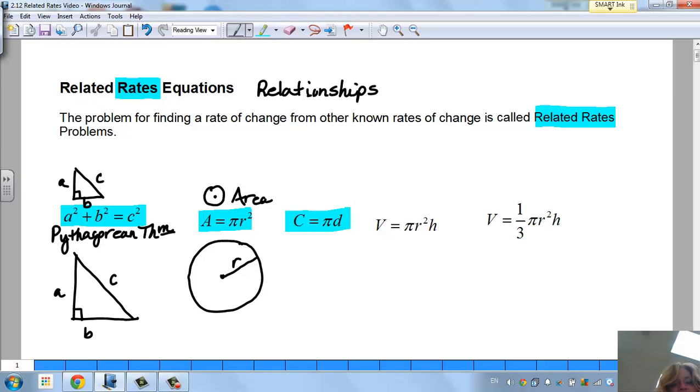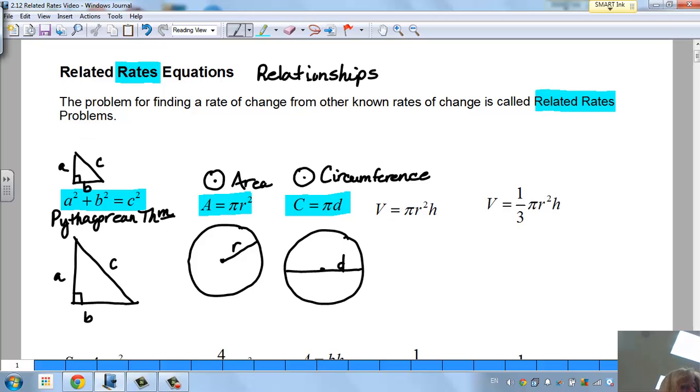The next one is C equals pi d, which is the circumference of a circle, or the distance around. Here we're using it with a diameter, and the diameter is straight across. Another way we've seen circumference is 2 pi r, so that is the direct relationship with the radius and circumference.